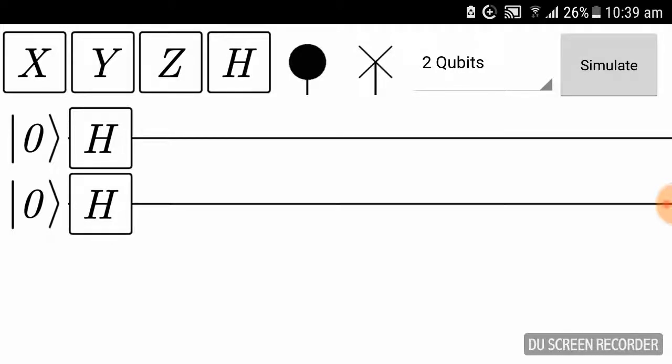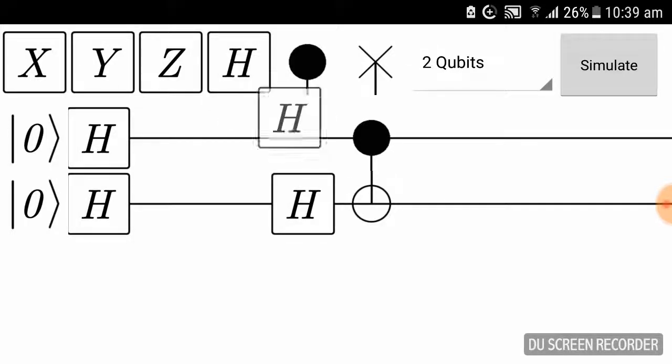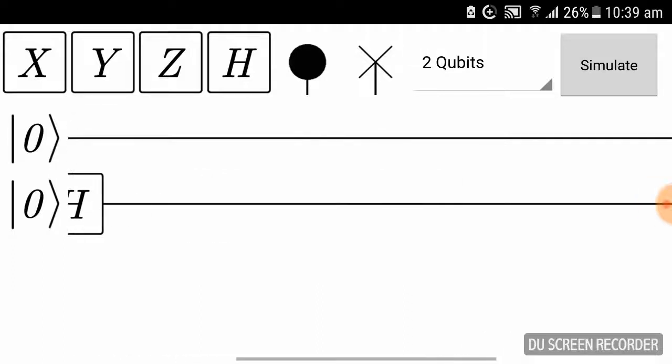I'm going to use two qubits now. I have placed Hadamard gates. The next thing is to define my oracle. Okay, this is the oracle I'm going to make. I'll explain later.